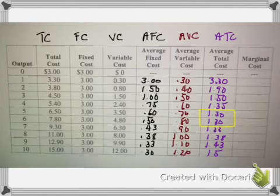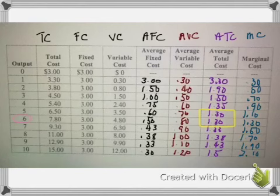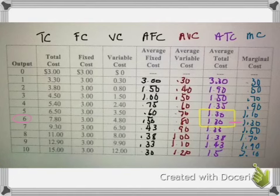Now we're going to look at marginal cost. Marginal cost is computed by the change in total cost over the change in quantity. Total cost going from zero units to one unit goes from $3.00 to $3.30, so $0.30, and then $0.50, and so marginal cost in this example is continuously increasing. Sometimes we'll see it fall and then increase, but it must always increase and will always intersect the average total cost at the minimum — $1.30 in this case. At six units of output, that is the efficient scale for this firm; they should produce at six units per period to minimize their average total cost.